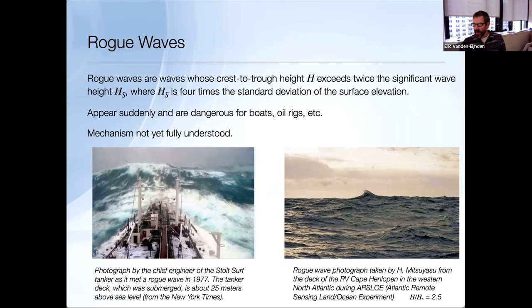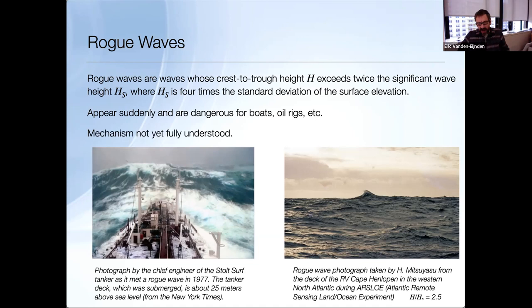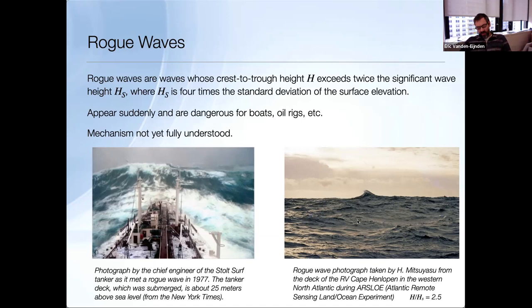Moving on to the other illustration: rogue waves. These are abnormally large waves observed in the deep sea—not like tsunamis which occur at shore, their mechanism is different. They are dangerous for boats and oil rigs and their mechanism is not fully understood. Here are pictures including one of a wave submerging a tanker and another observed by oceanographer Mitsuyasu. They are defined as waves much larger than the surrounding waves, which is why they are dangerous when the sea is already rough—they become monsters.